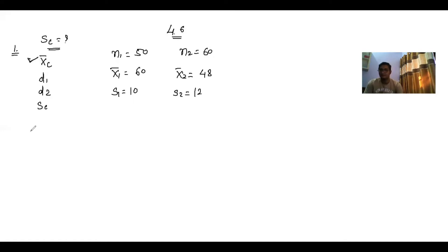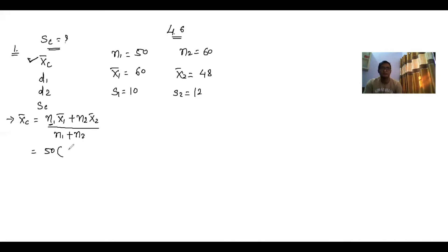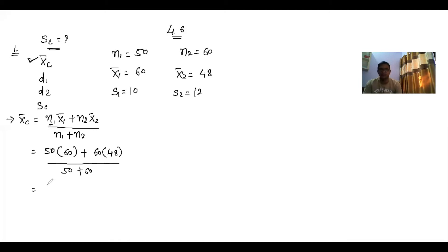First we find the combined mean x̄c. The formula is: x̄c = (n1·x̄1 + n2·x̄2) / (n1 + n2). Substituting values: (50 × 60 + 60 × 48) / (50 + 60) = (3000 + 2880) / 110 = 5880 / 110. Therefore x̄c = 53.45.